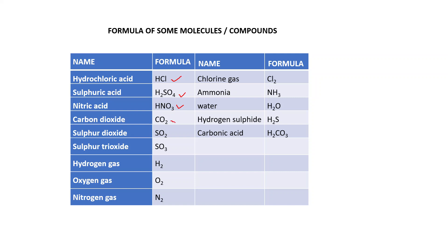Carbon dioxide: CO2. Sulfur dioxide: SO2. Sulfur trioxide: SO3. Hydrogen gas: H2, also known as dihydrogen. Oxygen gas: O2, or dioxygen. Nitrogen gas: N2, or dinitrogen. Chlorine: Cl2. Ammonia: NH3. Water: H2O. Hydrogen sulfide: H2S. Carbonic acid: H2CO3.